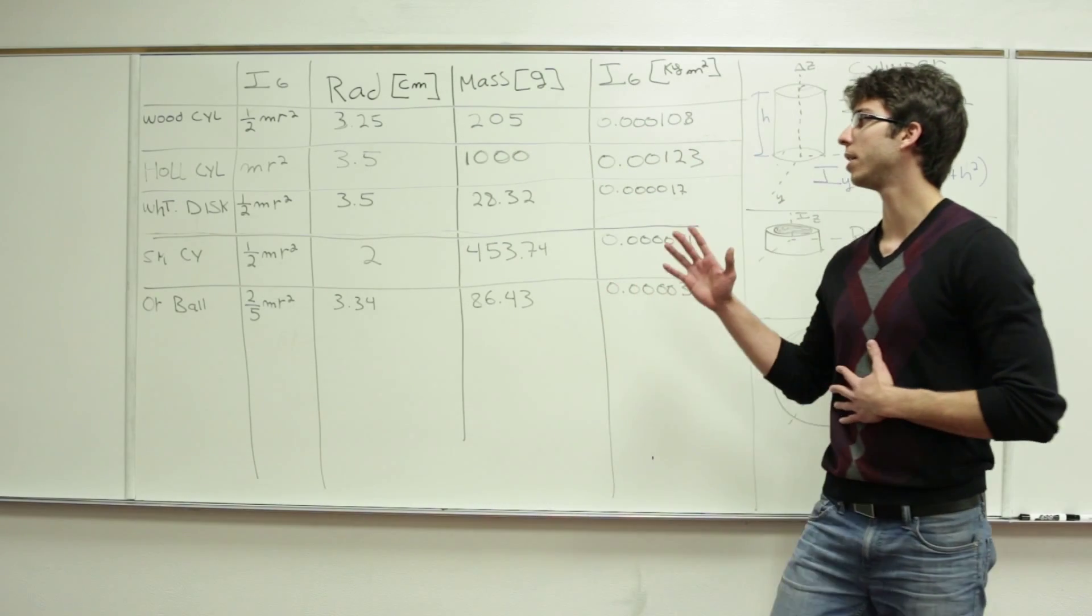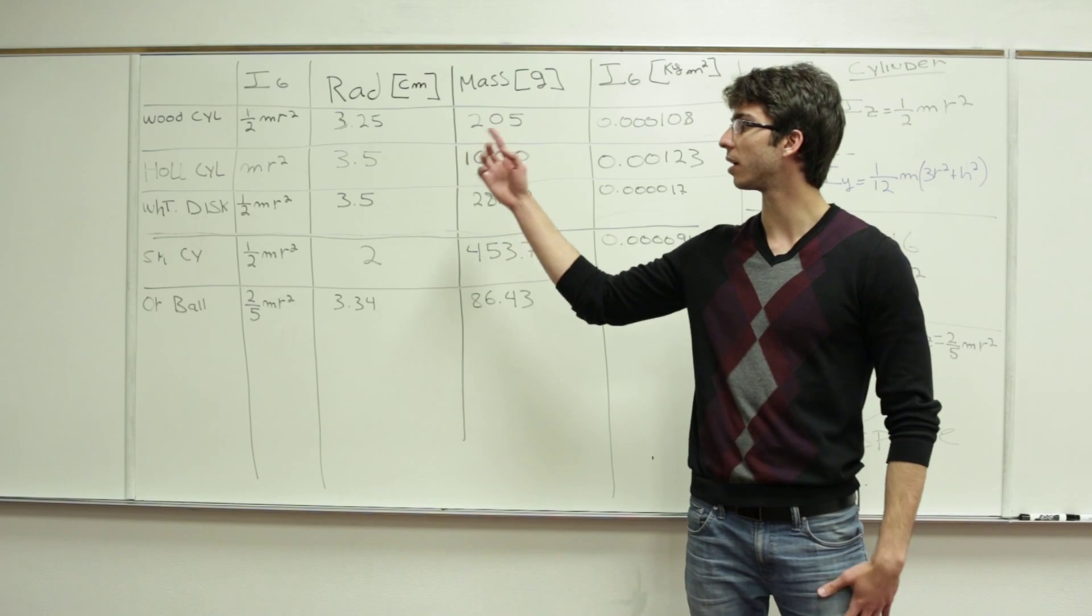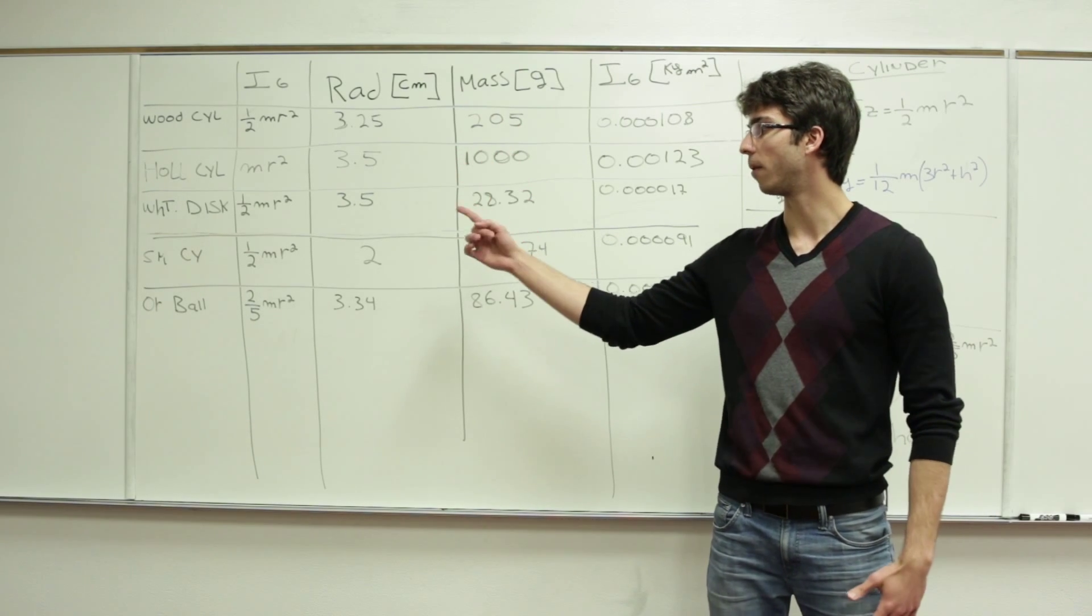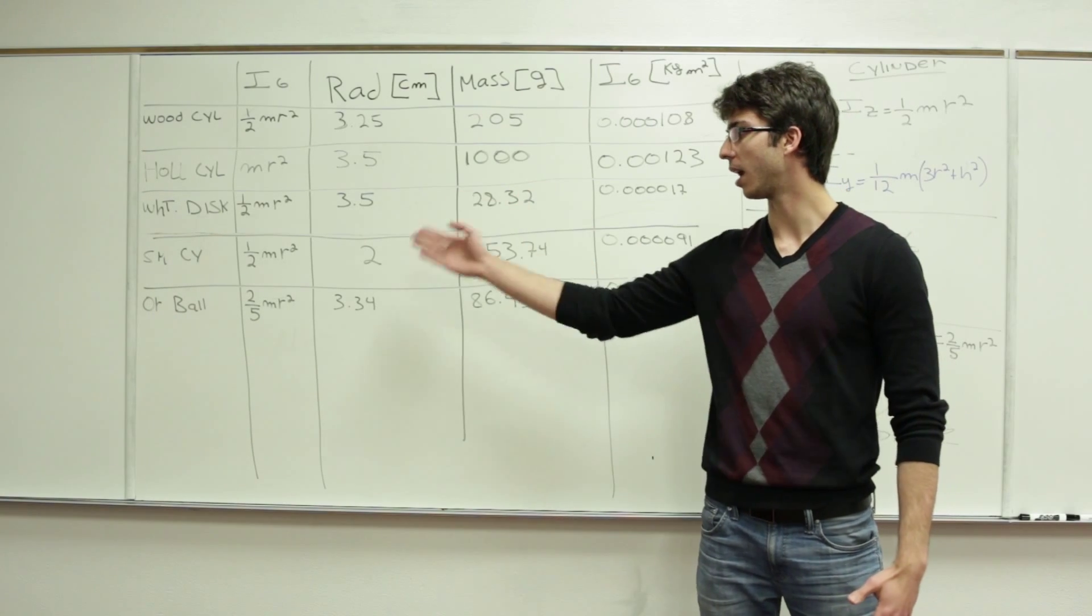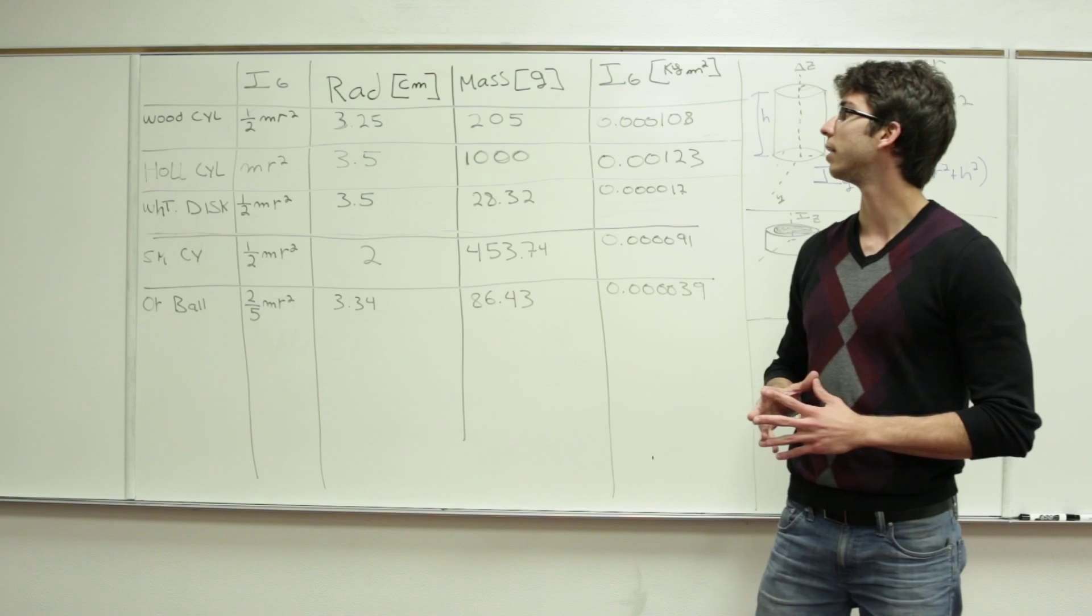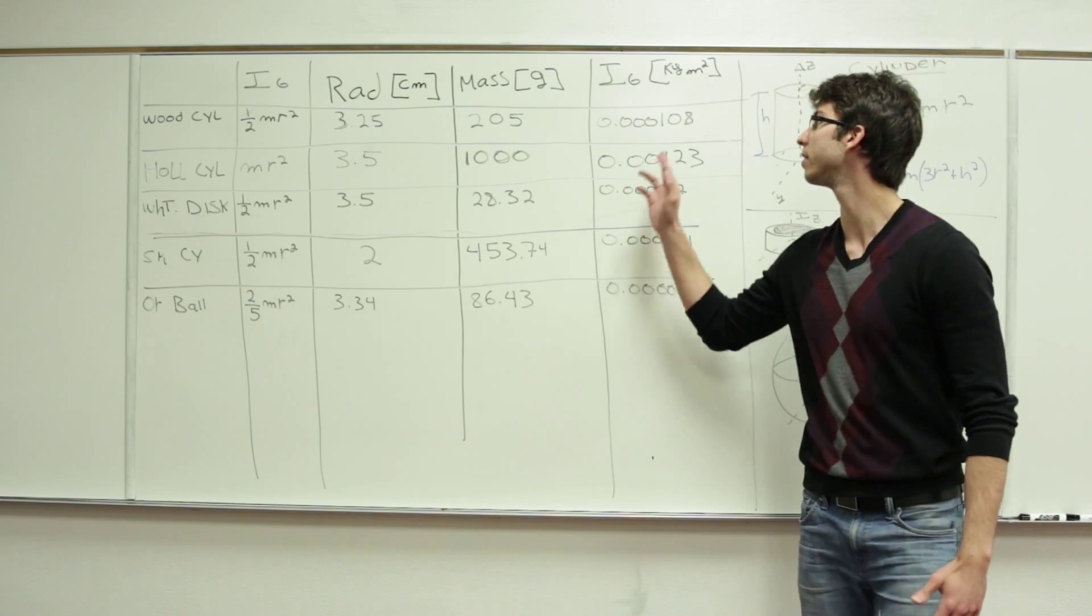We perform the calculations on five different objects: a wood cylinder, a hollow cylinder, a white disc, a small steel cylinder, and an orange ball. And here is the radius of each object, the mass of each object, and here is the moment of inertia.